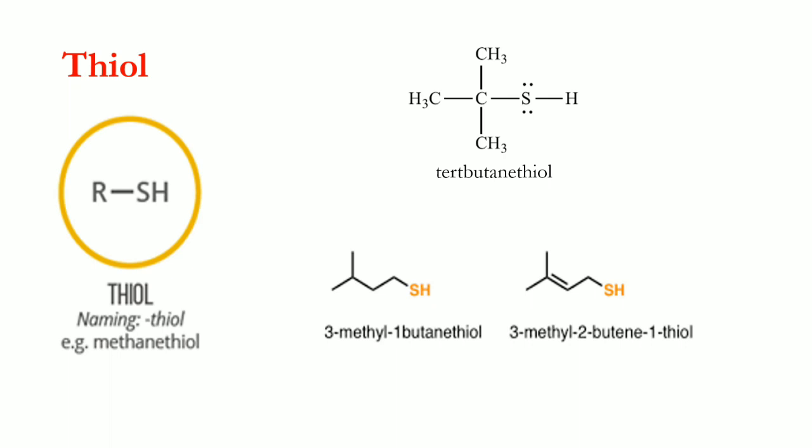In more thiol examples, we number the chain from the terminal where the functional group is closer. With a four-carbon chain and thiol at carbon one, and a methyl substituent at carbon three, the name is 3-methyl-1-butanethiol. Another example has a double bond: for a four-carbon chain with a double bond at carbon two and thiol at carbon one, we get 2-buten-1-thiol.